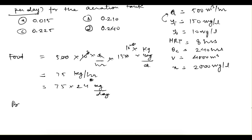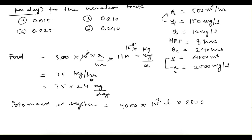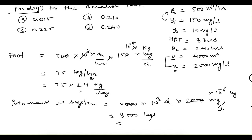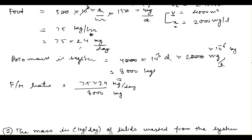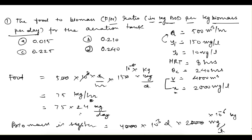Biomass in the system = volume × MLSS = 4000 m³ × 10³ L/m³ × 2000 mg/L × 10⁻⁶ = 8000 kg. So F/M ratio = 1800 kg/day ÷ 8000 kg = 0.225 kg BOD per kg biomass per day. Option C is the answer. Again, straightforward — just be sure about units.